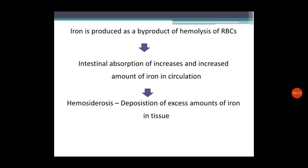As a result of this hemolysis, one byproduct is iron, produced from the hemolysis of RBCs. In addition, as a result of anemia, increased absorption of iron occurs in the GIT as a compensatory mechanism to increase hemoglobin synthesis. These two sources — hemolysis and increased GIT iron absorption — cause increased iron in circulation. This condition is known as hemosiderosis: deposition of excess amounts of iron in tissues throughout different parts of the body.